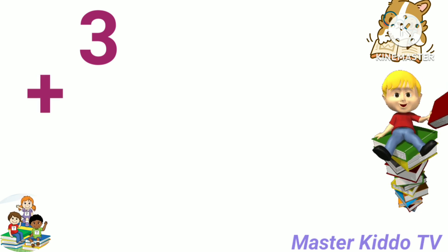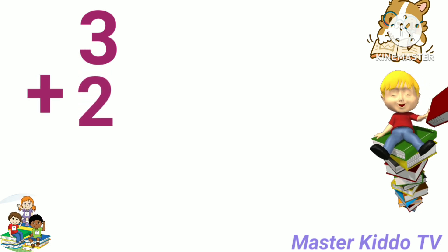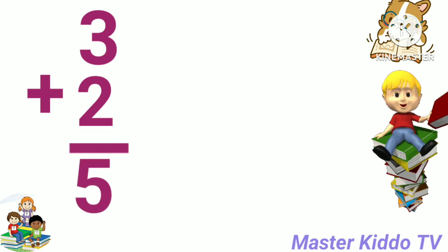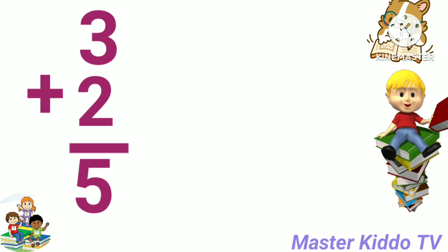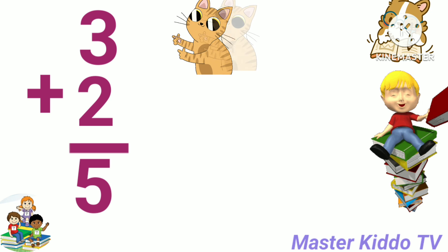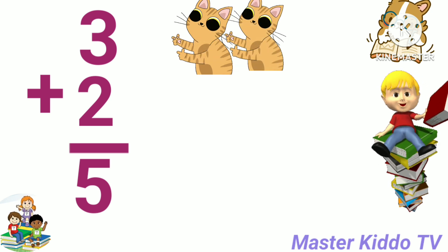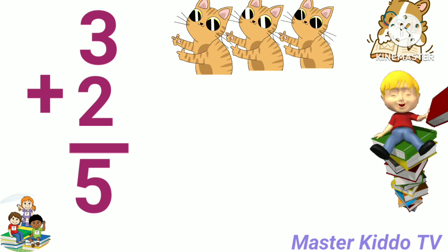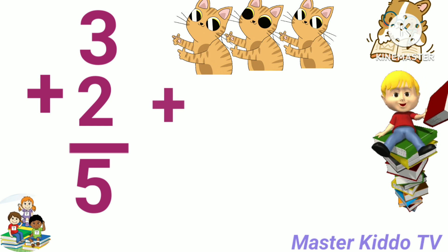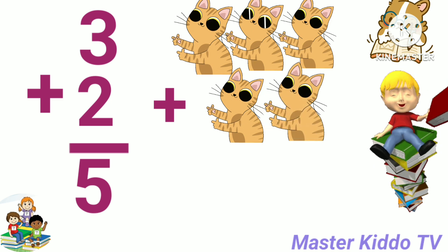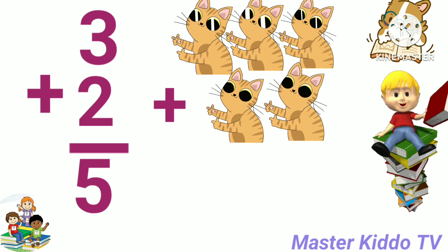3 plus 2 is equal 5. Now we add: 3 carrots plus 2 carrots.